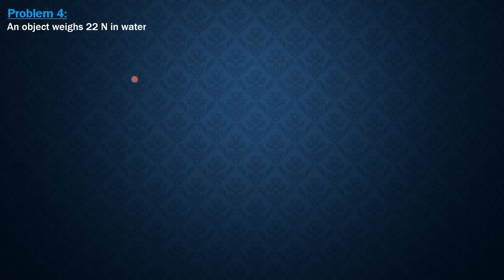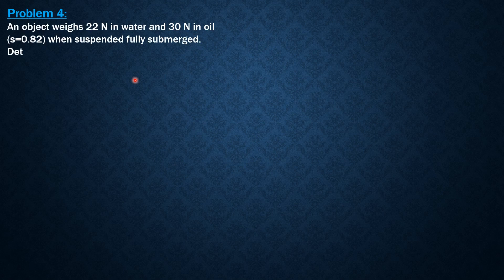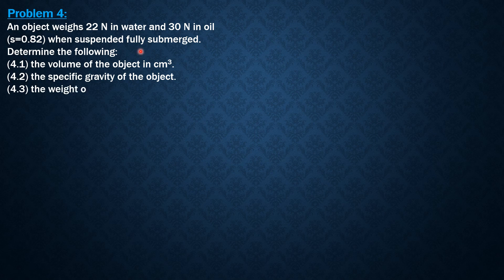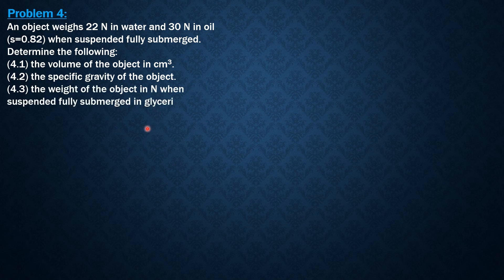Here is the problem. An object weighs 22 N in water and 30 N in oil of specific gravity 0.82 when suspended fully submerged. Determine the following: the volume of the object in cubic centimeters, the specific gravity of the object, and the weight of the object in newtons when suspended fully submerged in glycerin of specific gravity 1.26.